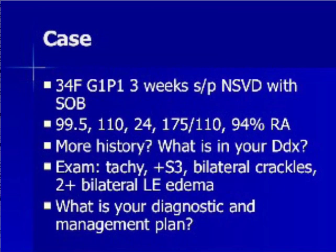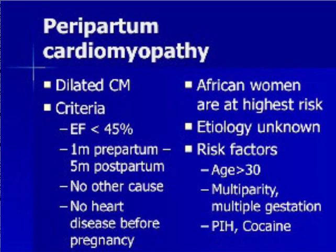A 34-year-old woman who is 3 weeks status post normal spontaneous vaginal delivery presents with shortness of breath. The exam shows tachycardia, the presence of an S3 gallop, bilateral crackles, and 2-plus pitting edema. The patient has evidence of acute heart failure due likely to peripartum cardiomyopathy. PPCM is a dilated cardiomyopathy that occurs any time from one month prepartum to five months postpartum. Ejection fraction is less than 50% and mortality correlates with lower EF. To diagnose PPCM, no other cause of acute heart failure can be found, and patients cannot have had cardiac disease before pregnancy. Women of sub-Saharan African descent are at highest risk.